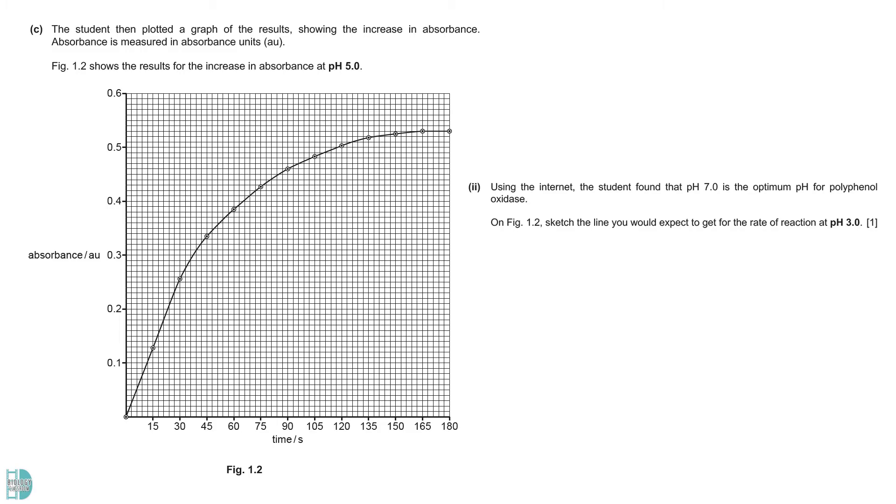Part 2 says that the optimum pH for polyphenol oxidase is 7. You are asked to sketch the line you would expect to get for the rate of reaction at pH 3.0. Since the pH is further away from the optimum pH, the rate of reaction should be lower. The formation of the colored product would be slower, leading to an increase in absorbance less steeply.